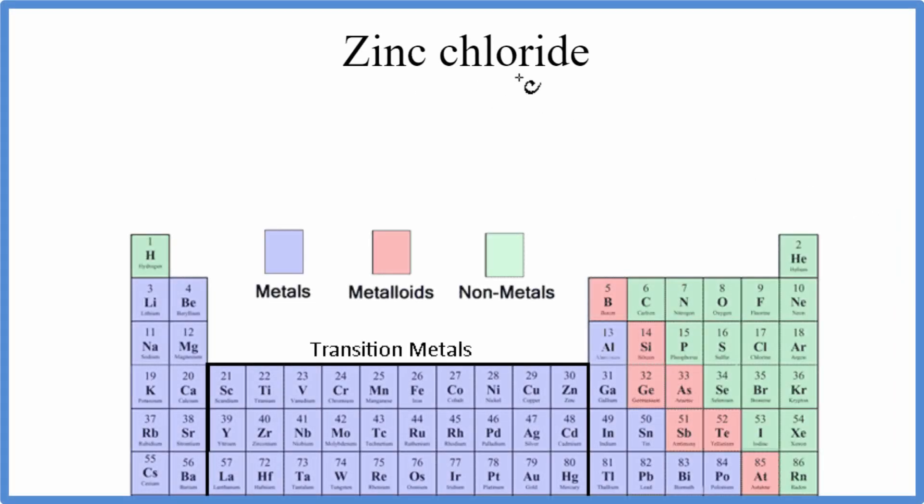To write the formula for zinc chloride, we'll go to the periodic table and look up zinc, that's Zn. We look up chlorine for the chloride, and that's Cl.